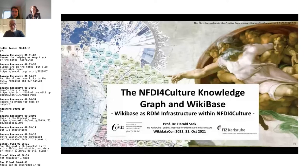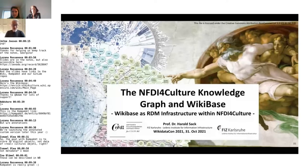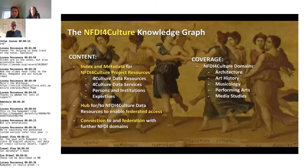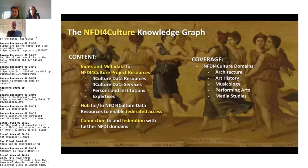I'm going to continue this talk about NFDI for Culture and will talk about the NFDI for Culture Knowledge Graph and its connection to Wikibase. NFDI for Culture is only one out of over 30 NFDI consortia. The main purpose of these projects — a huge effort over the next 10 years — is to enable research data management based on the FAIR principles. Several of these consortia will do this based on a knowledge graph, and this is also what we are going to do in NFDI for Culture.